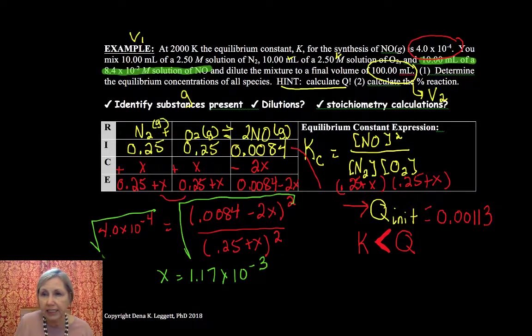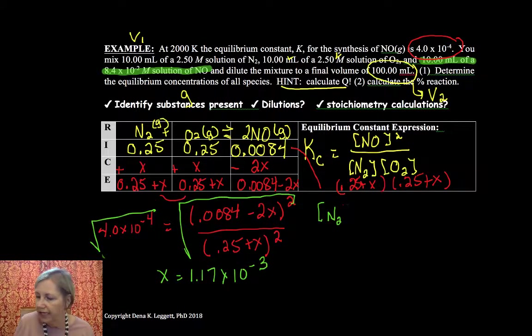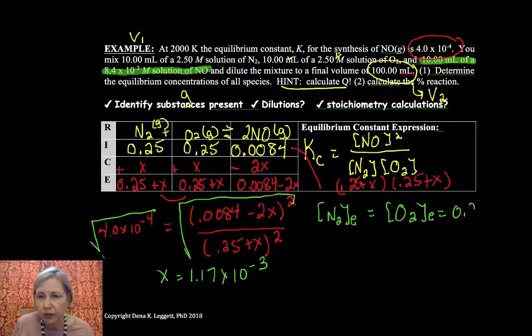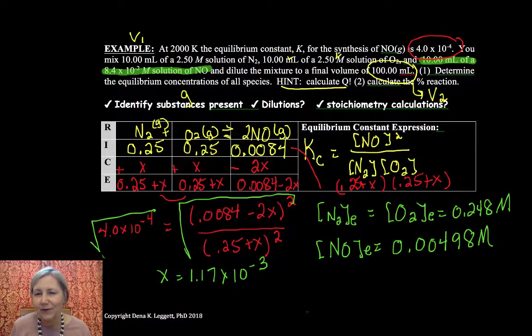Okay, so now if we plugged all those in to get our equilibrium concentrations, because that's what the question asks us - what are all of our equilibrium concentrations? Our N2 at equilibrium is equal to our O2 at equilibrium, and that is 0.248 molar. Don't forget those units. And my NO at equilibrium, I ended up with 0.00498. And I'm sure you're going to rush to class to tell me if I did some algebra errors there, if you're one of my kiddos.